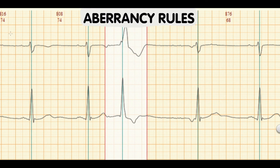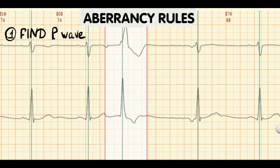Several rules help characterize a supraventricular premature beat with aberrancy. The strongest rule is the presence of a P-wave, because all aberrant complexes originate from a supraventricular region and therefore should have atrial activation represented as a P-wave. If a P-wave is found before the wide QRS complex, this is the strongest sign of aberrancy. Note that the P-wave can be hidden within the preceding T-wave or ST segment.